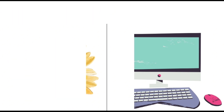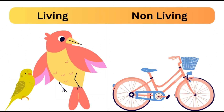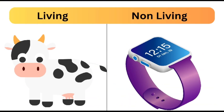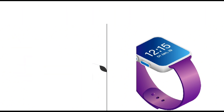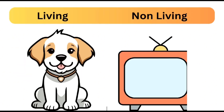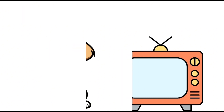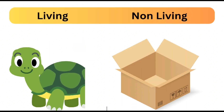Parrot is a living thing and cycle is a non-living thing. Cow is a living thing and watch is a non-living thing. Dog is a living thing and television is a non-living thing. Turtle is a living thing and box is a non-living thing.